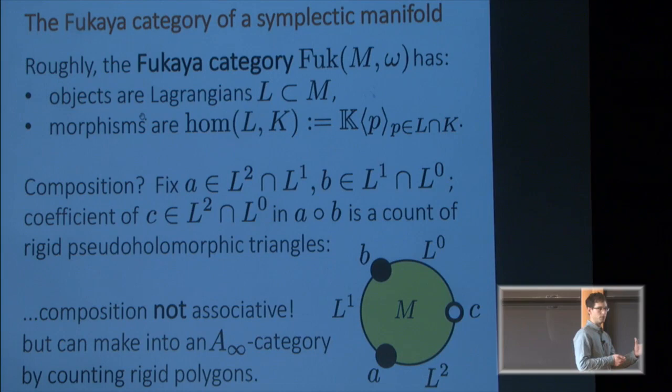But it turns out that if you enrich your category by counting rigid polygons, where instead of just taking in two inputs, you take in an arbitrary number of inputs, you do the same kind of picture except you have a D plus 1 times punctured disk for a D-ary operation. Then you get a fairly well-behaved object called an A-infinity category. That's what the Fukaya category is.